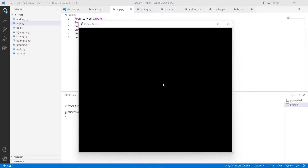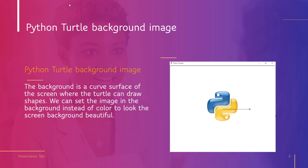We can draw anything on this screen with the help of a turtle. Now let's move forward and discuss Python Turtle Background Image. The background is a curved surface of the screen where the turtle can draw shapes. We can set images in the background instead of color to make the screen background beautiful. We use the bgpic function to set an image in the background.